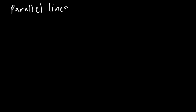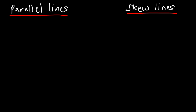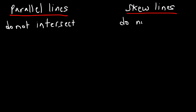What's the difference between parallel lines and skew lines? Both lines do not intersect — two parallel lines will never meet up with each other, and the same is true for skew lines: they do not intersect. The difference is that parallel lines are coplanar lines.